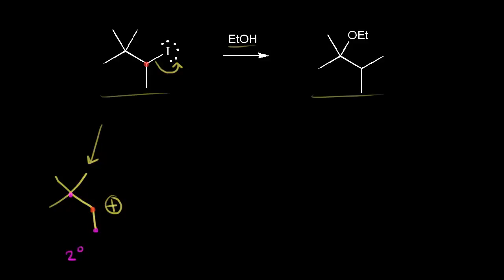If you think about the video on carbocations and rearrangements, we can have a rearrangement here to form a more stable carbocation. A methyl shift makes sense, so this methyl group is going to shift over to this carbon. So we would have a methyl group that's moved over, and we're taking a bond away from the carbon circled in green. So that carbon gets a plus one formal charge — this is our new carbocation.